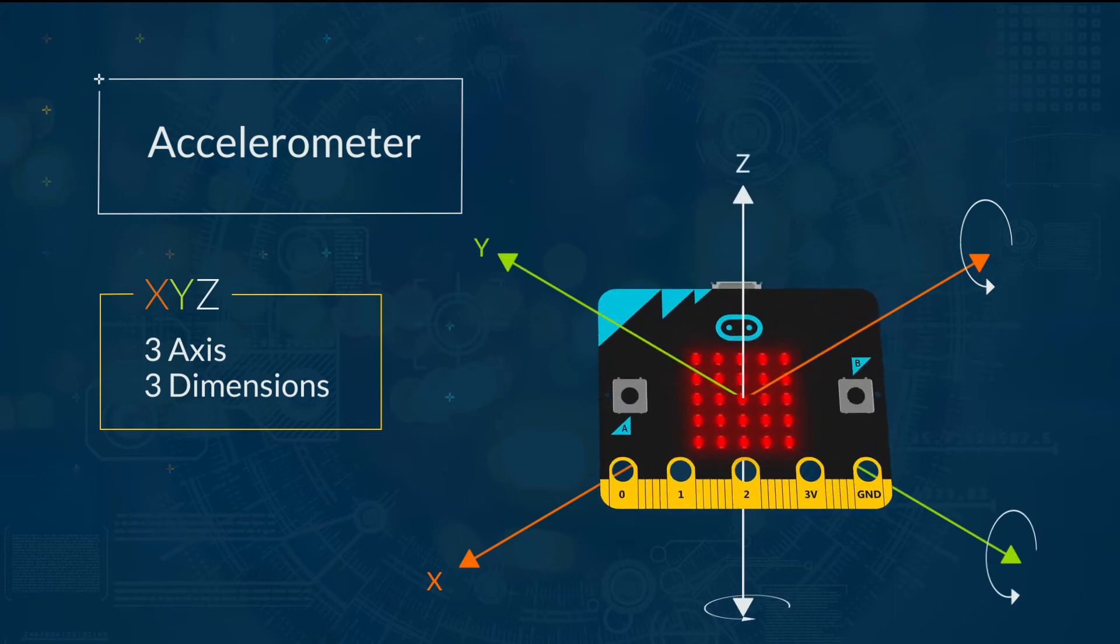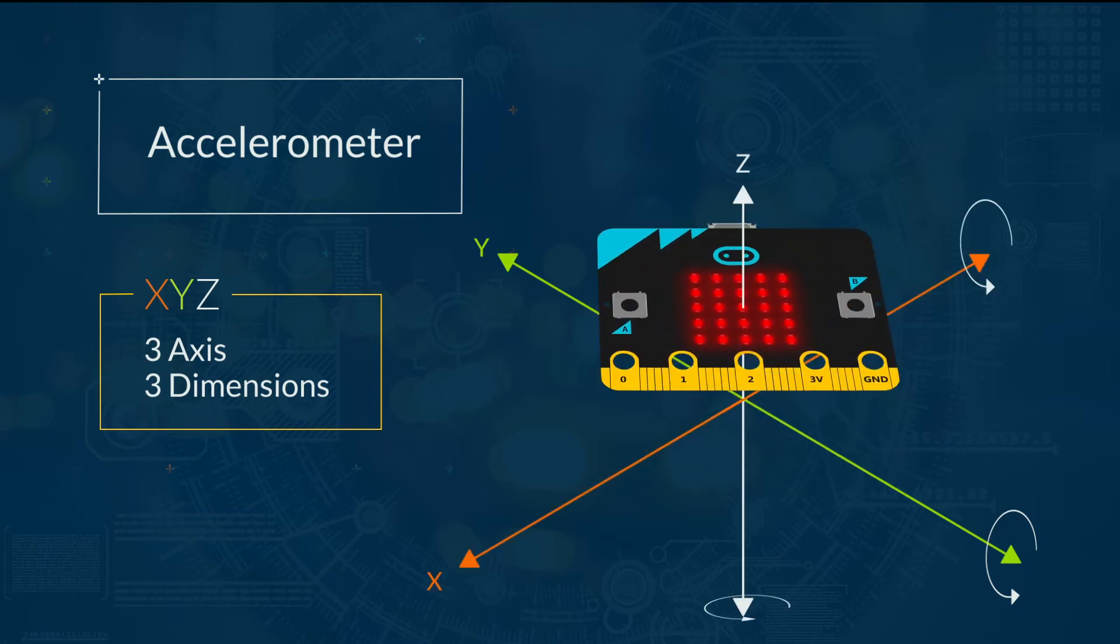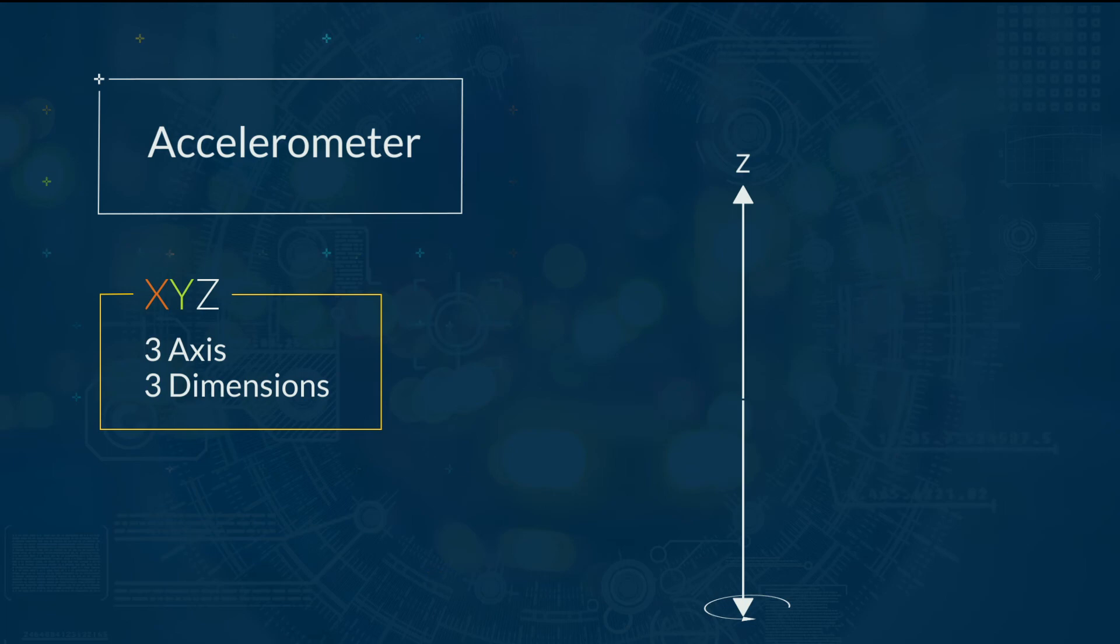Tilt it away from you and towards you. This is the y-axis. Move it up and down. This is the z-axis.